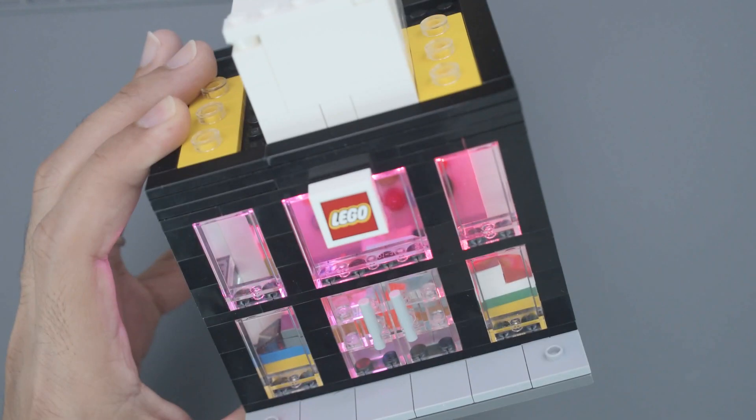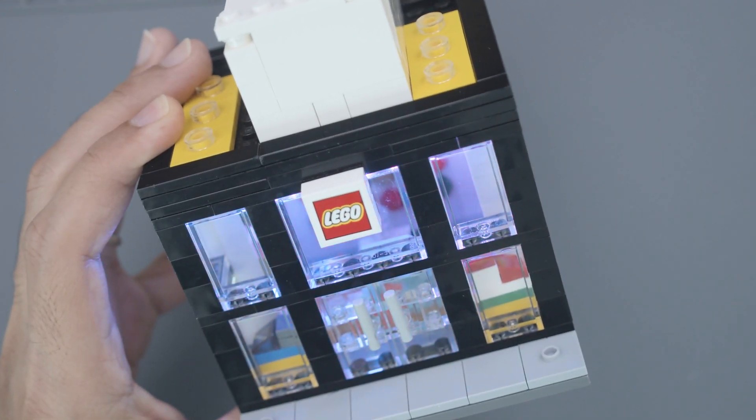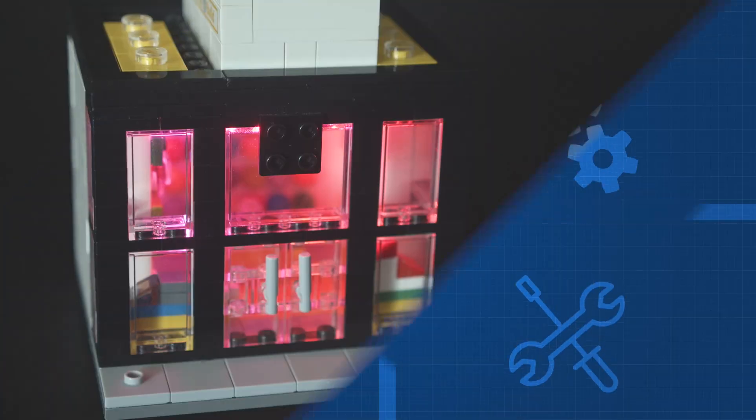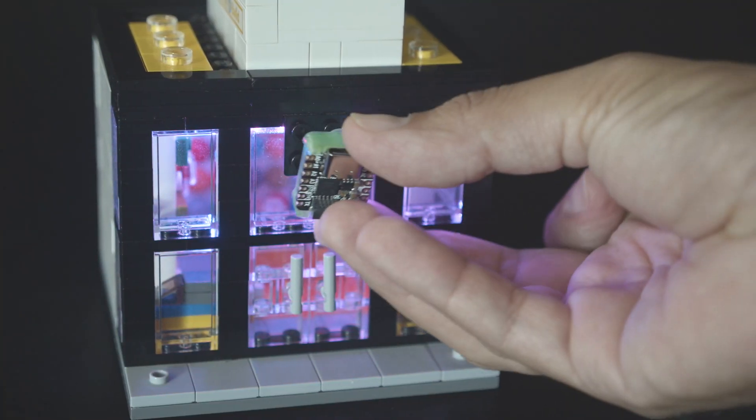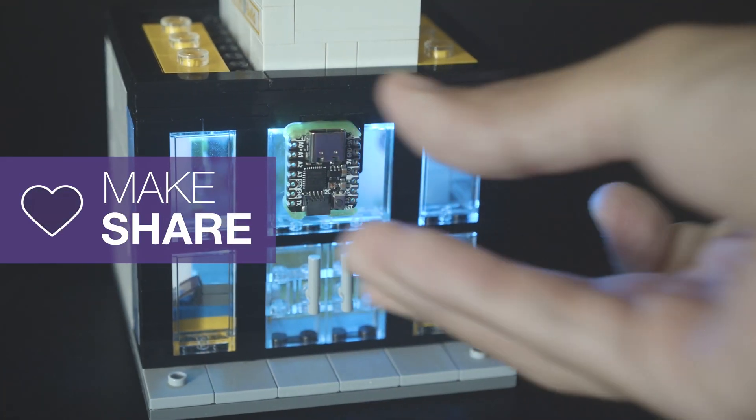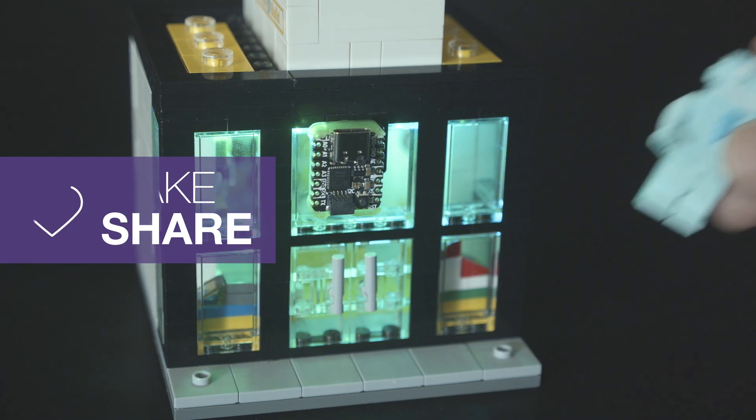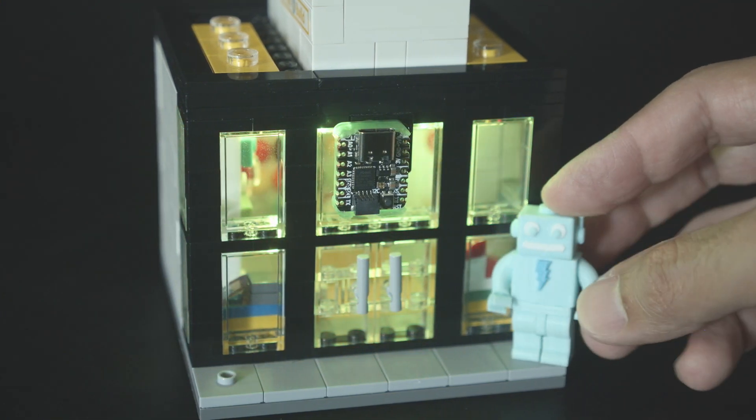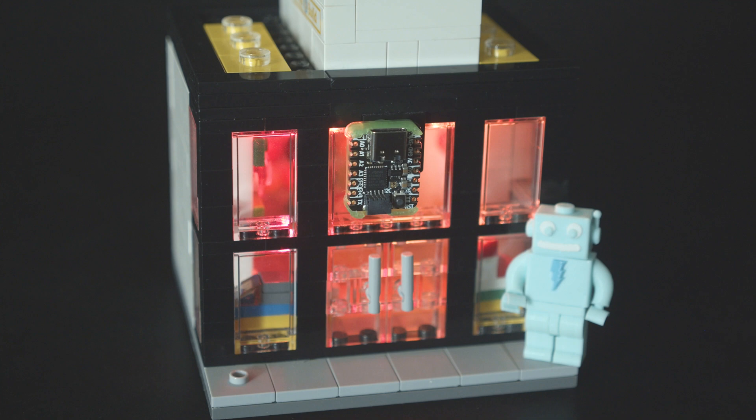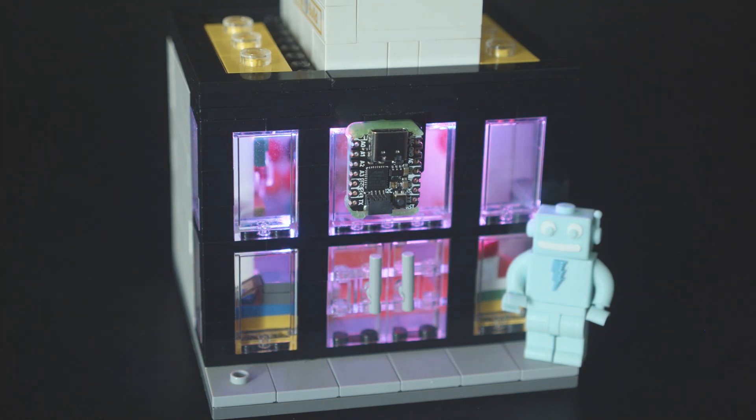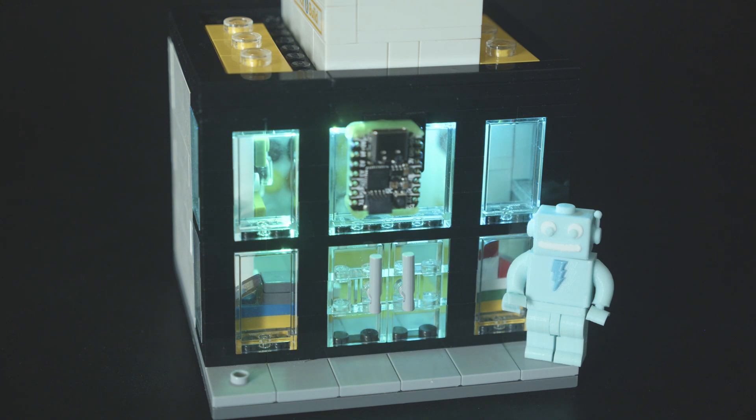And there you have it, that's how we upgraded our Lego set with a CutiePie and NeoPixels. I hope this inspires you to pick up a CutiePie and try out CircuitPython. Thanks so much for watching and don't forget to subscribe for more products from Adafruit. We'll see you next time. Bye.